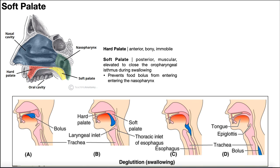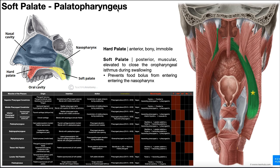Let's now talk about the muscles of the soft palate, the first being the palatopharyngeus. Anytime you see 'palato' in the name of these muscles, it indicates association with the palate — either hard or soft. This green muscle with the star is the palatopharyngeus, which lives deep on the inside of the middle and inferior pharyngeal constrictors we discussed in the previous video.